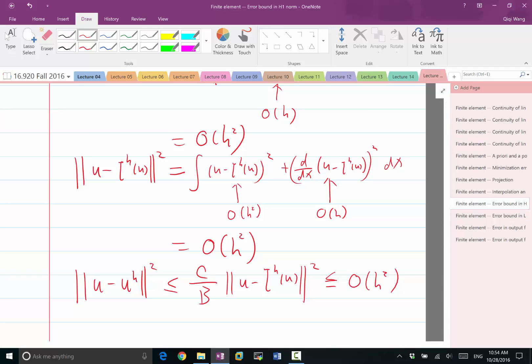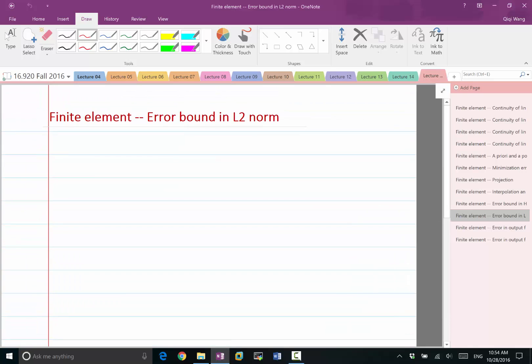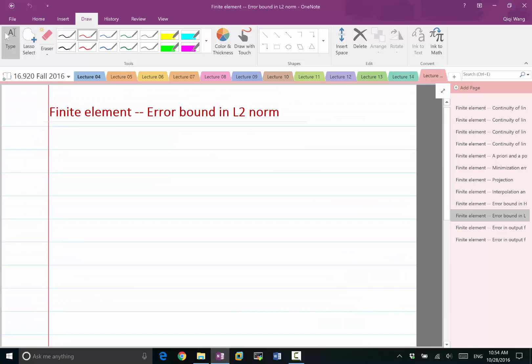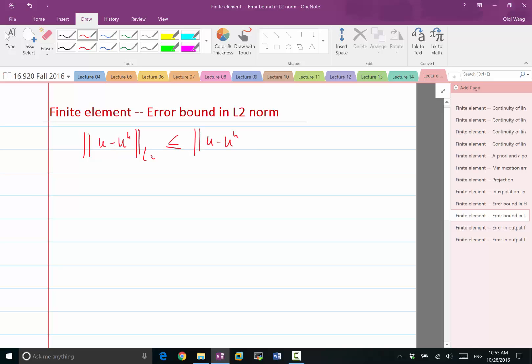So that gives us a bound on this Sobolev norm. And of course the bound on L2 norm is even easier. Once we have the Sobolev norm, the bound in L2 norm is pretty easy. The L2 norm is basically one component of this H1 norm. So if I square it, it is also O H squared.